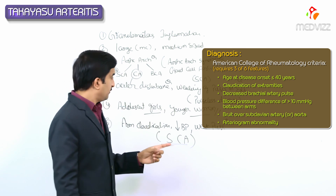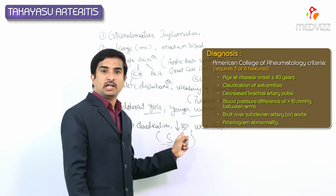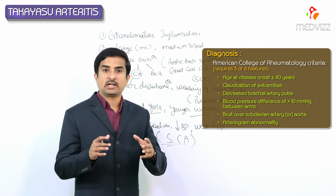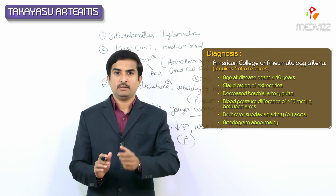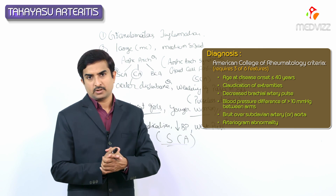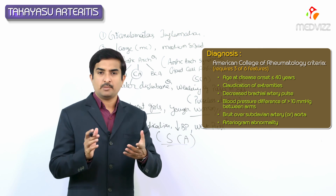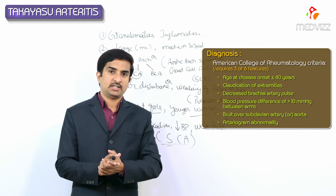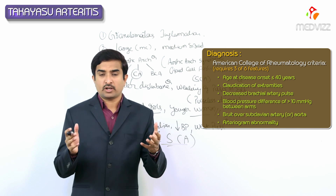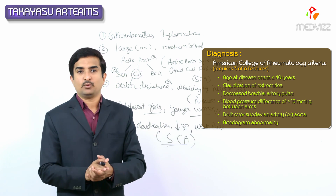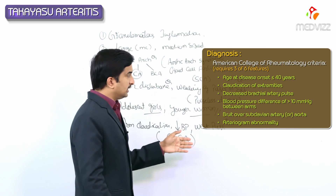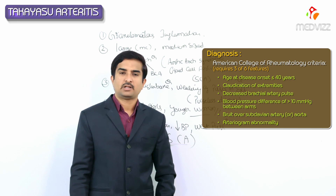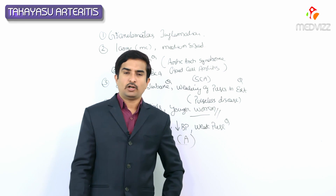Further criteria include: decreased brachial artery pulse, blood pressure difference between upper and lower limb greater than 10 mmHg between arms, bruit over the subclavian artery or aorta, and arteriogram abnormality of the affected vessel. If three out of these six criteria are satisfied, the diagnosis of Takayasu arteritis is confirmed.